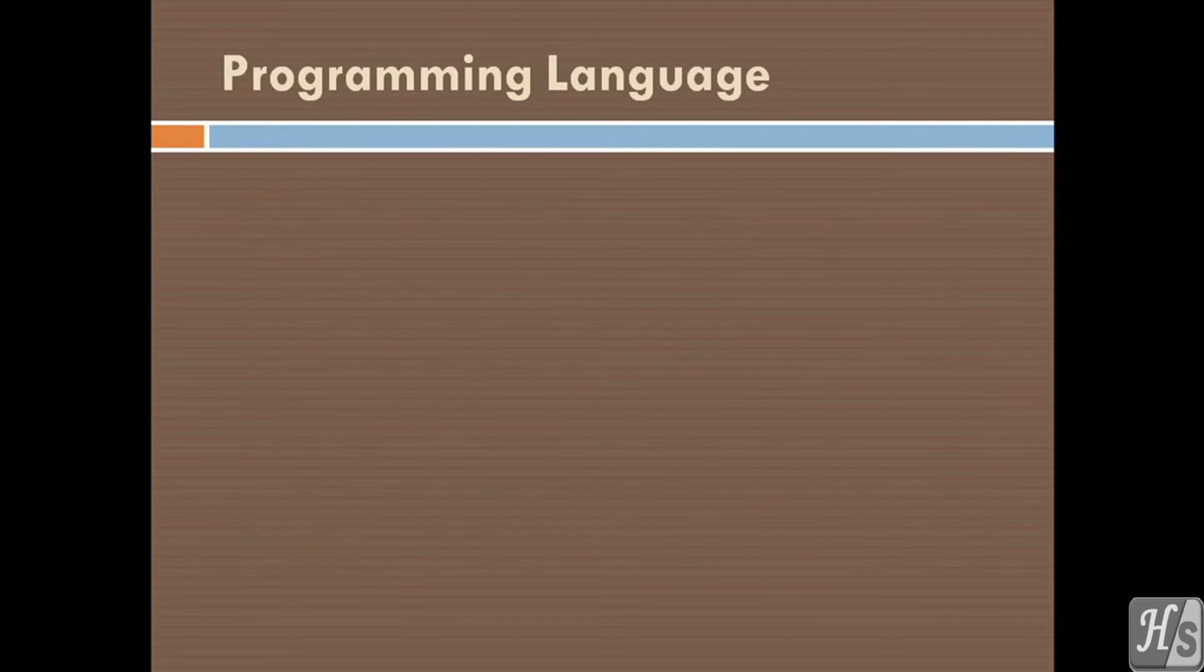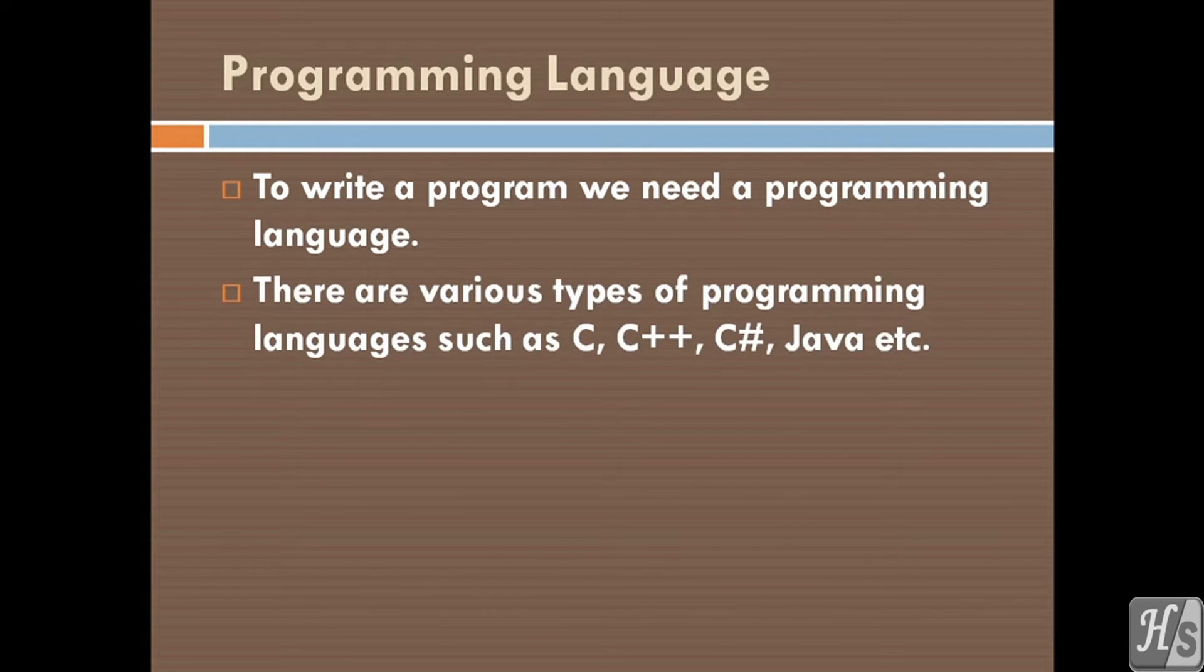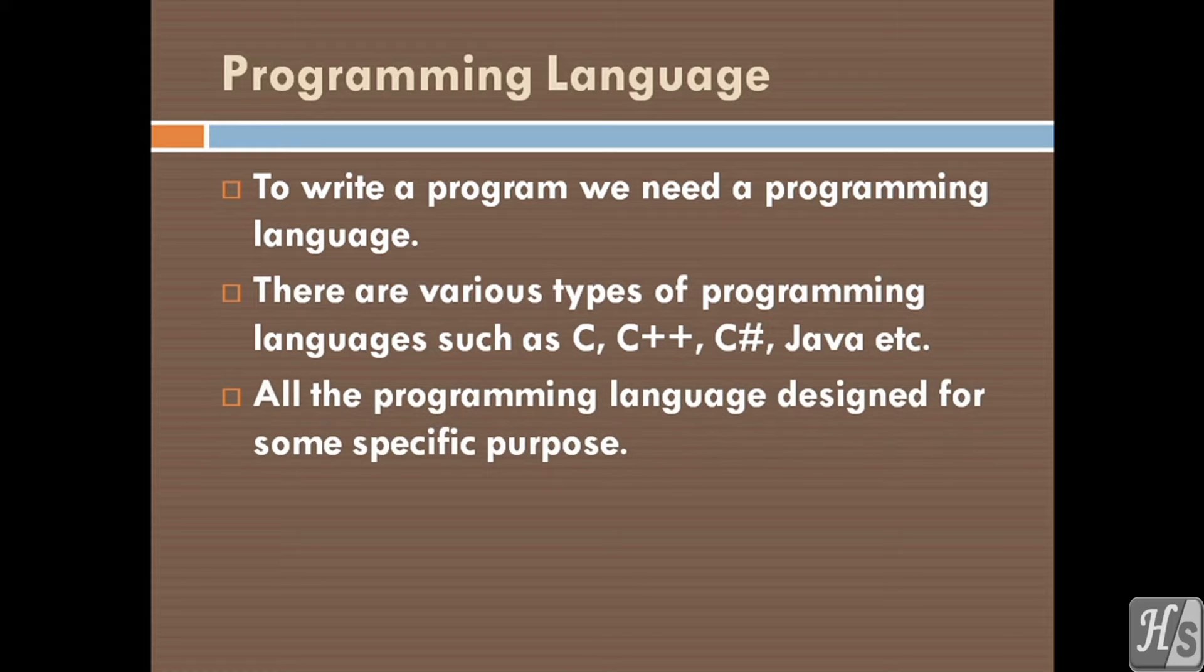Programming language. To write a program we need a programming language. There are various types of programming languages, such as C, C++, C-sharp, Java, and many more. All programming languages are designed for some specific purpose.